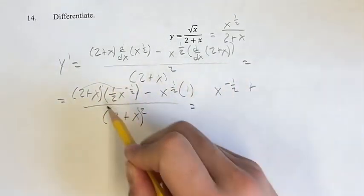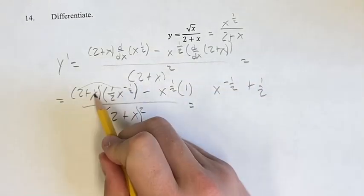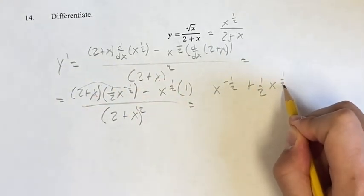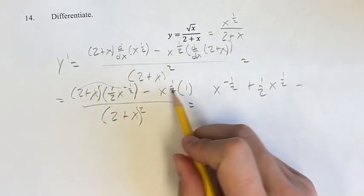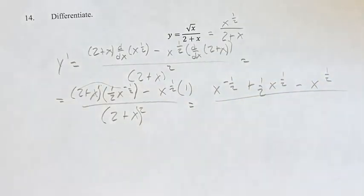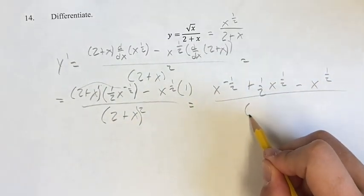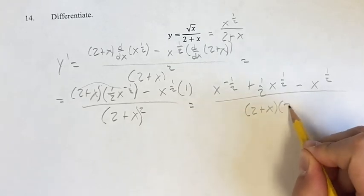So this is going to be plus, your coefficient is 1 half, x to the positive 1 half. Minus 1 times x to the 1 half is x to the 1 half. This is all over 2 plus x times 2 plus x.